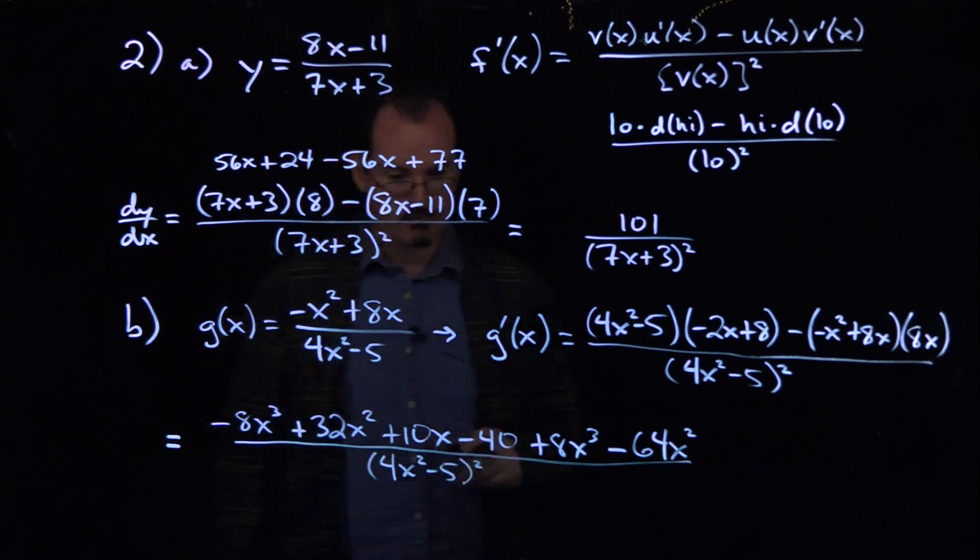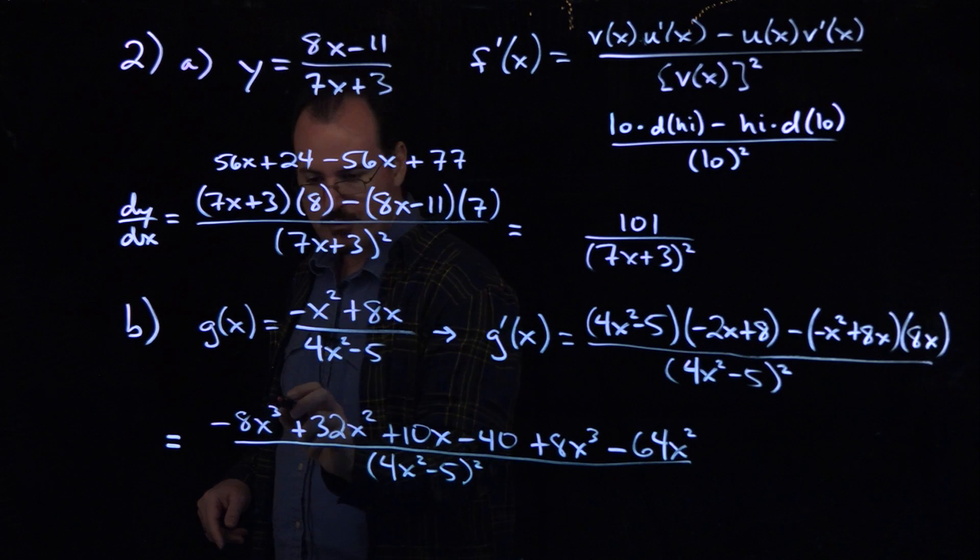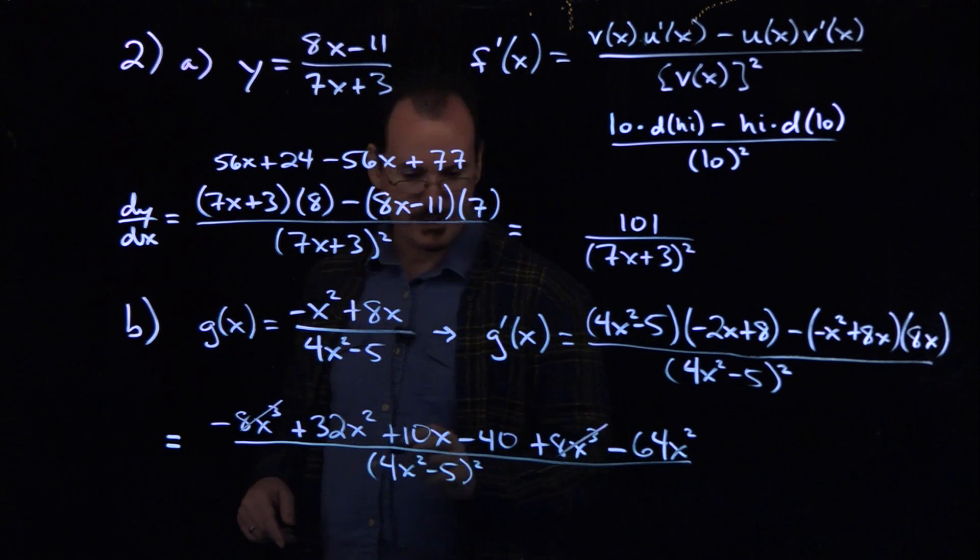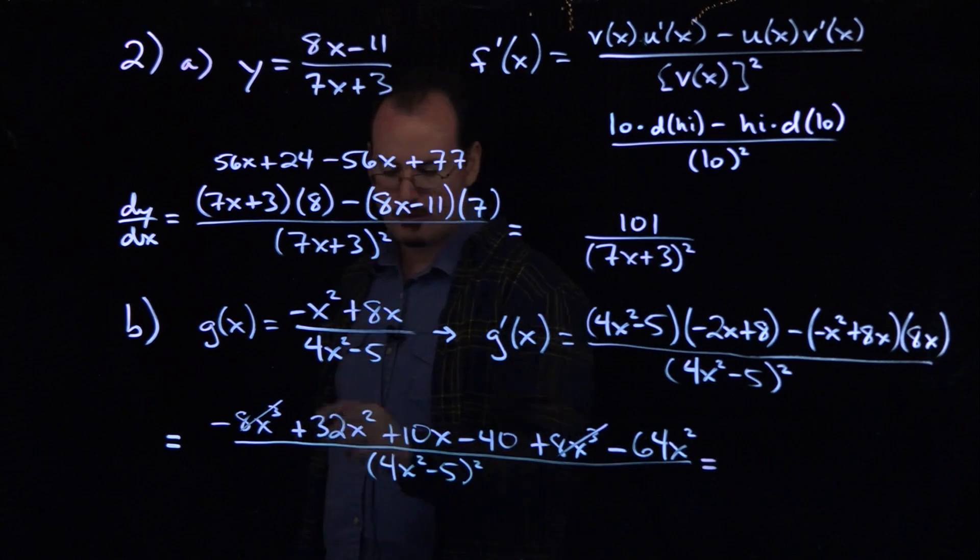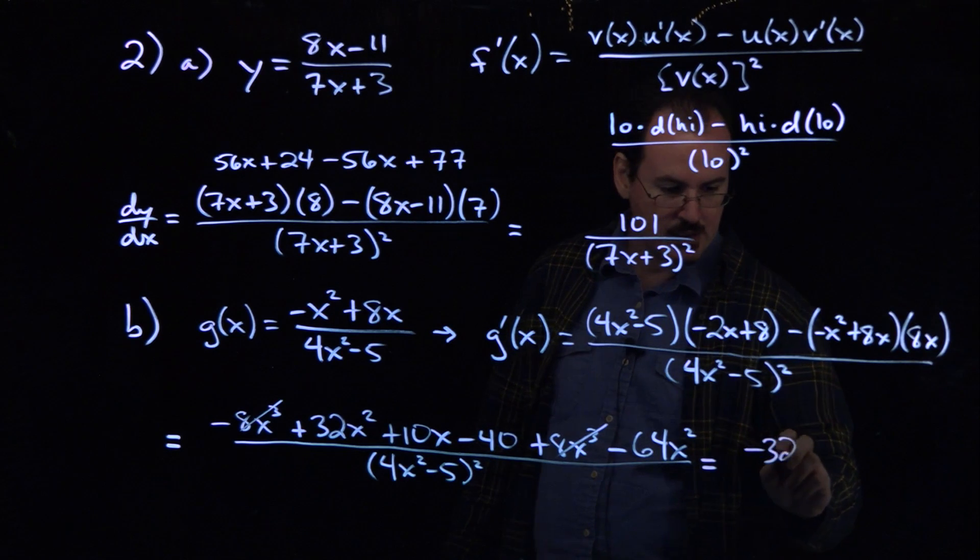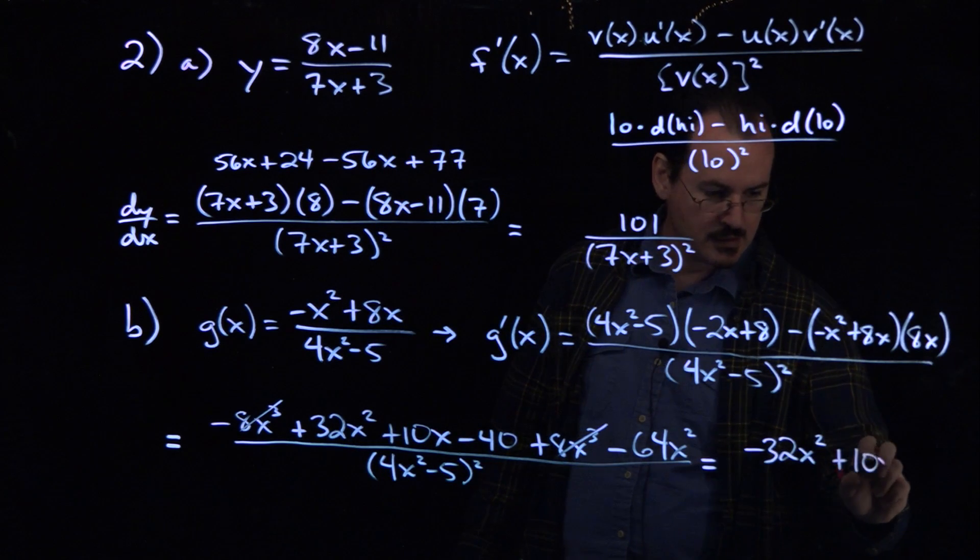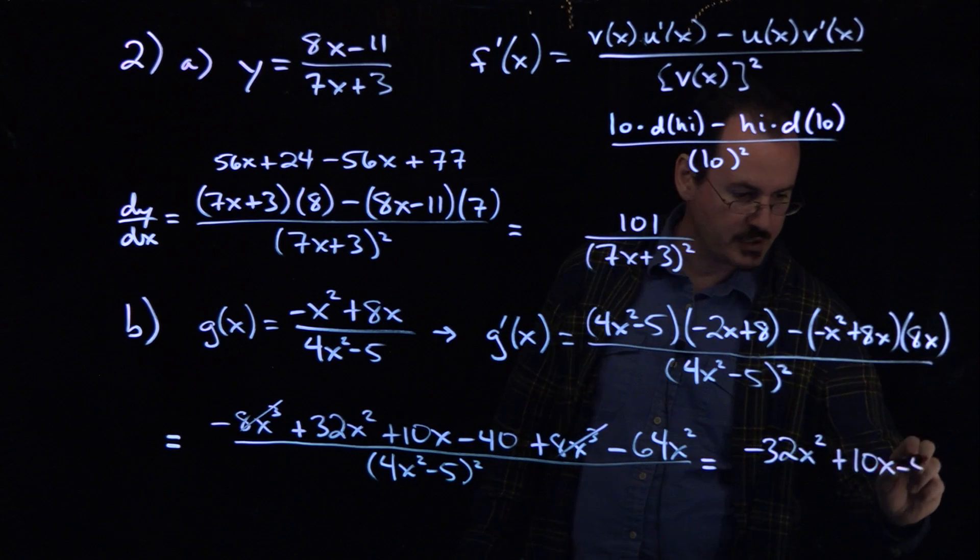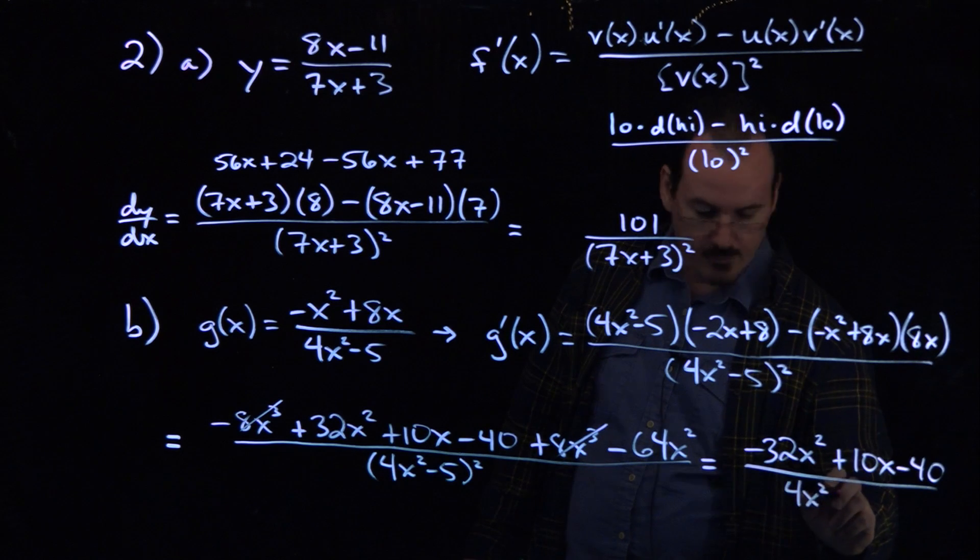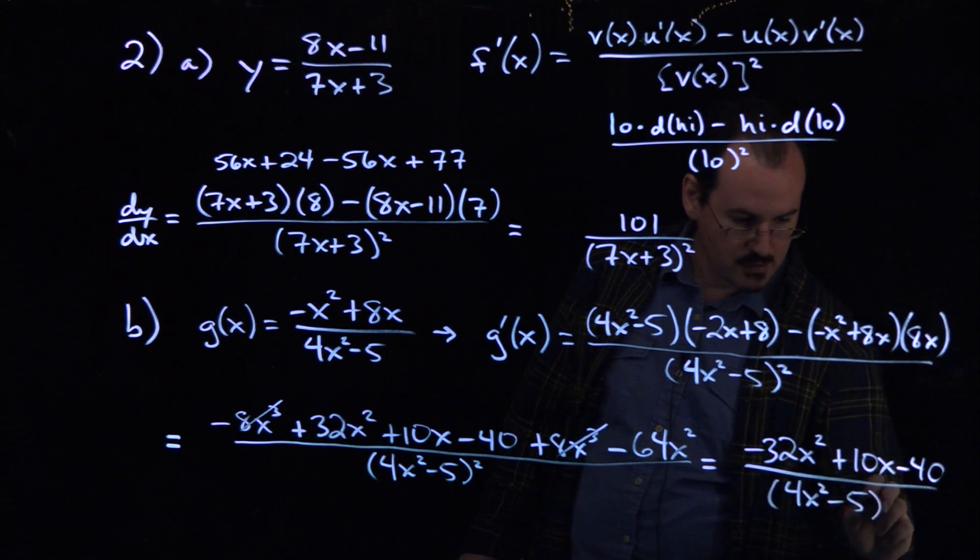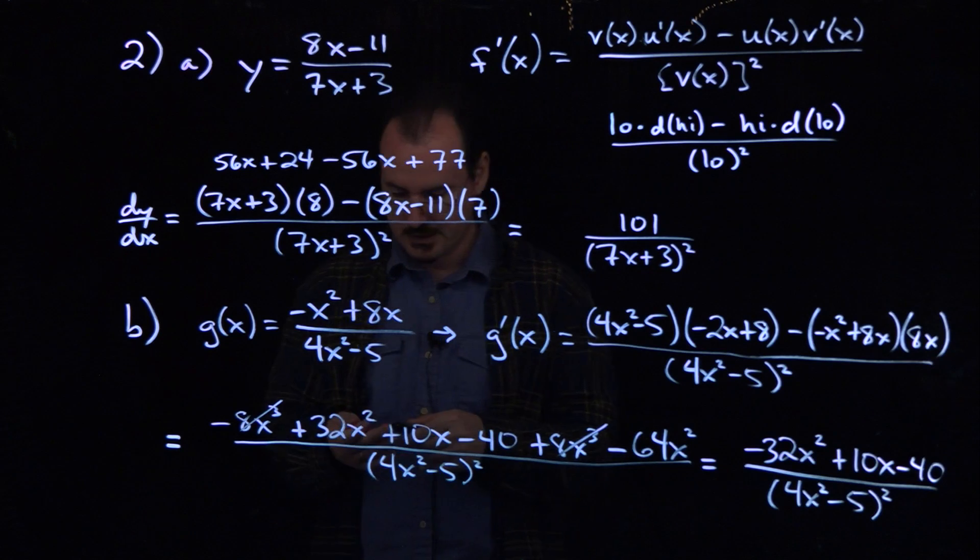So you see that the quotient rule can make kind of a messy derivative, but we can hopefully simplify a few things. We've got a negative 8x cubed, and we've got a positive 8x cubed here. We've got like terms on the x squared terms here, so minus 64 plus 32, that's minus 32x squared. And then no other x terms, so plus 10x. And then constant term minus 40. This is still then going to be divided by 4x squared minus 5 squared. And there's really no point in expanding the denominator here. You can just leave it like that.